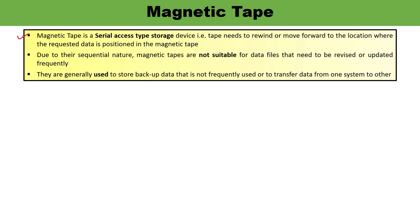Magnetic tape is suitable for backup storage. Examples of magnetic tape use include backups in servers, workstations, and large computers. Magnetic tapes are also used for transporting data from one place to another. Since its nature is sequential, magnetic tapes are not suitable for data files that require frequent updates or revisions. Magnetic tapes can also be used as offline storage or secondary storage.